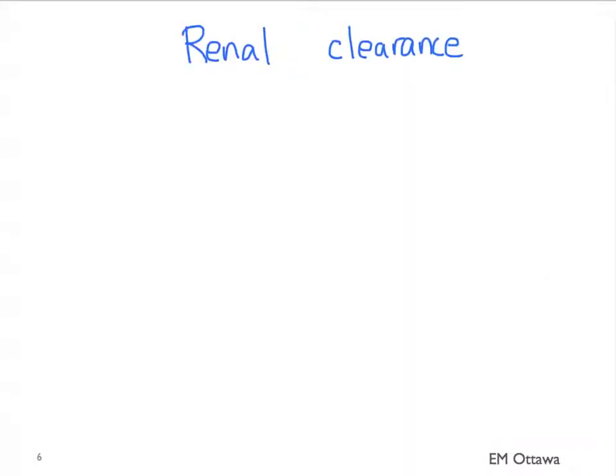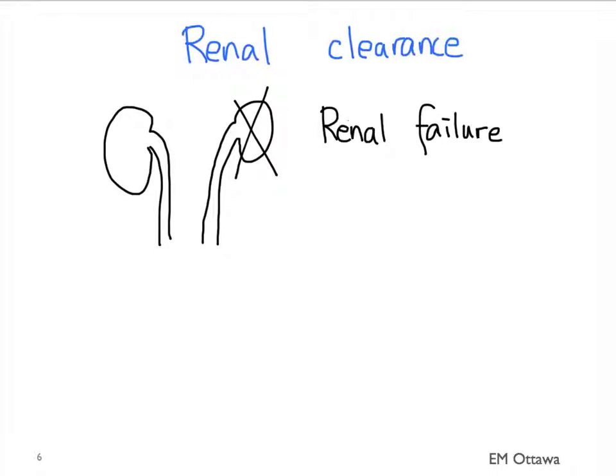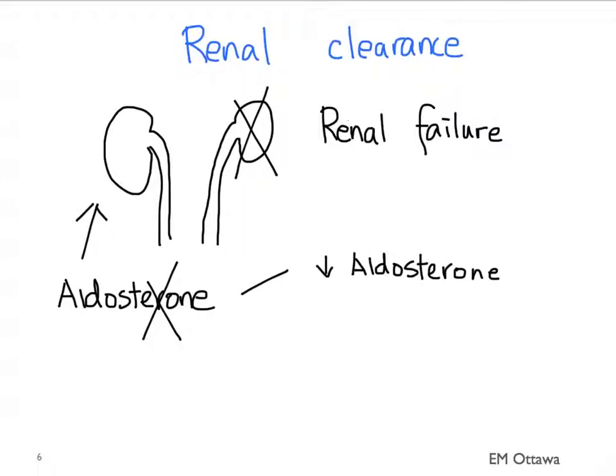Second, renal clearance. Potassium is excreted by the kidneys. If there is renal failure, potassium builds up in the body. The kidneys also excrete potassium based on aldosterone. Inhibiting aldosterone production or decreased aldosterone production will decrease the renal clearance for potassium. They can include congenital syndromes or medications such as ACE inhibitors, angiotensin II blockers, and spironolactone.